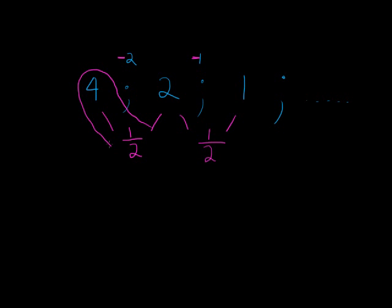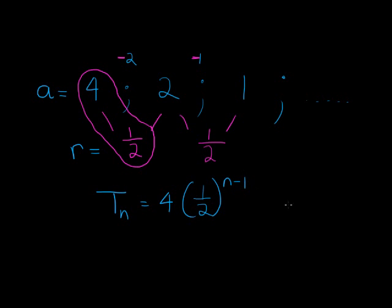So I circle the first two in these two number patterns. The first one is my a value, my first term. The next one is my r value, and this one's general term will be T_n is equal to 4 times (1/2)^(n-1). There you go.